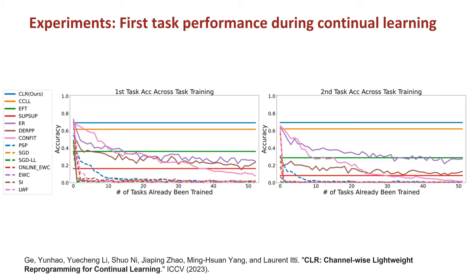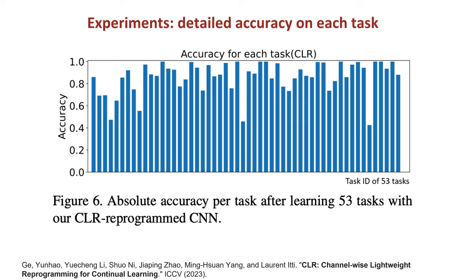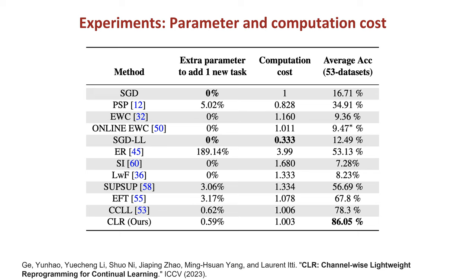Here we present the performance matrix for the initial two tasks. The key takeaway is that our method exhibits no decline in performance across these tasks. Additionally, we provide the final performance matrix for all 53 tasks after the learning process is complete. We also present a comparison of the memory and computational costs of our method relative to existing baselines. Our method's memory cost is approximately only 0.6%, significantly lower than other methods that achieve comparable performance, like SubSub and ER.